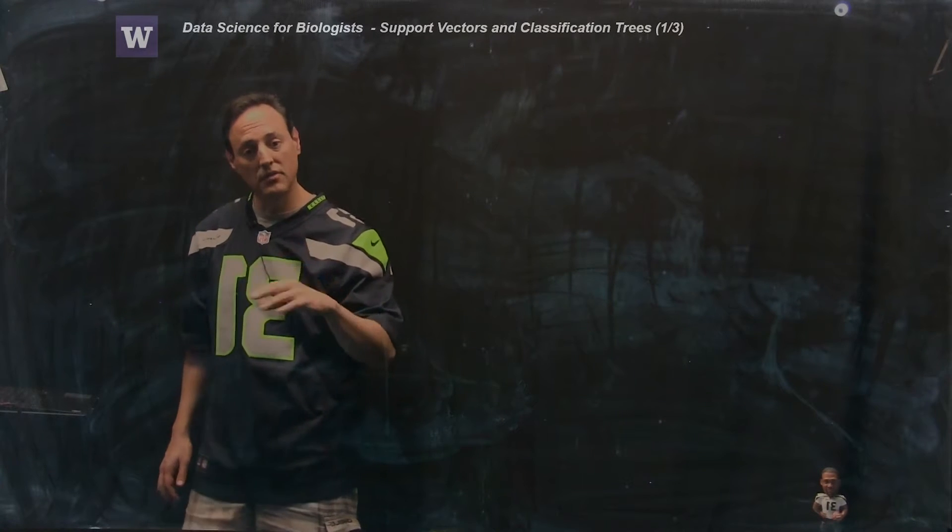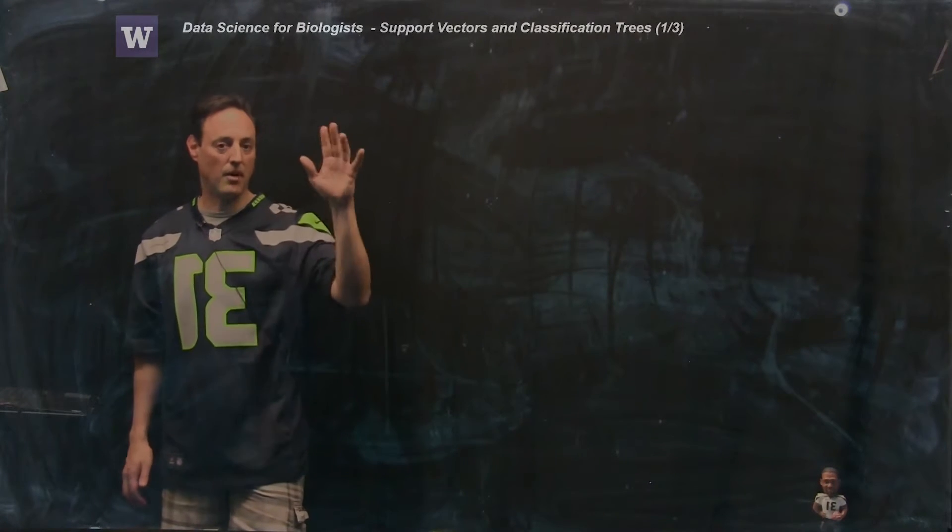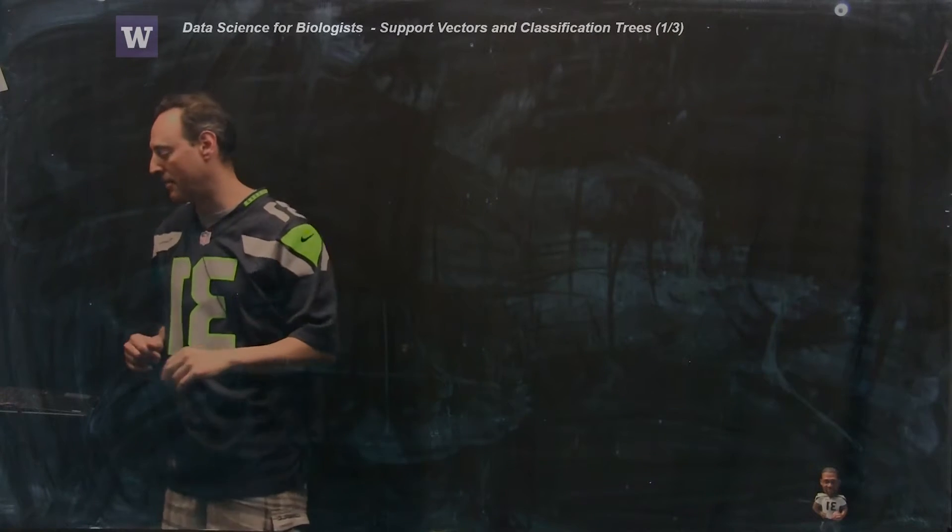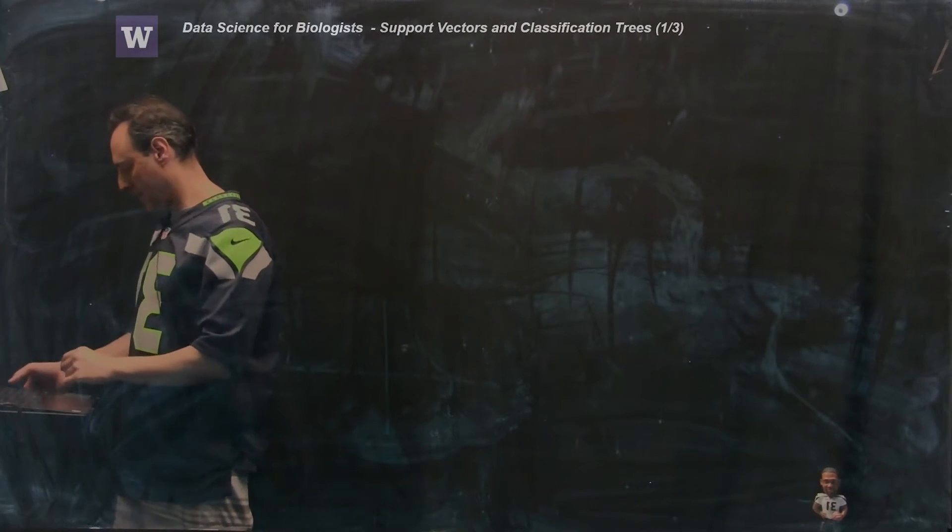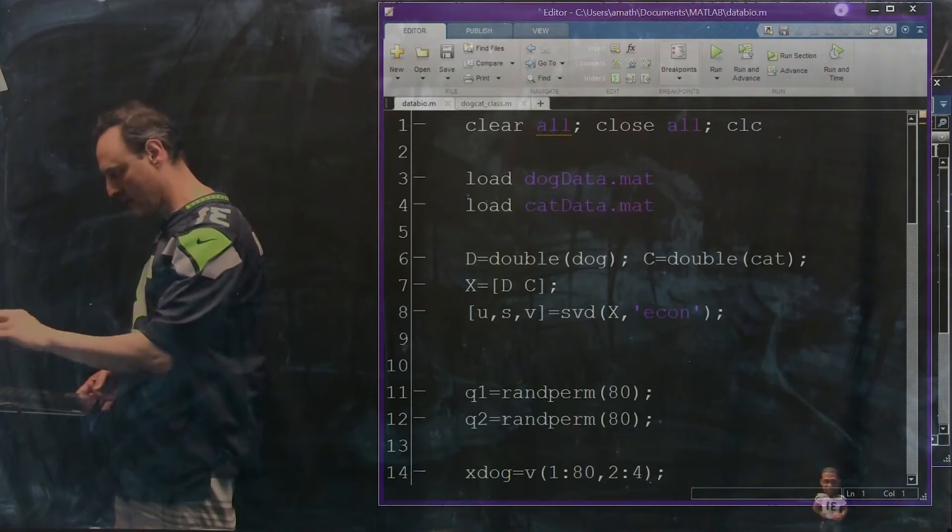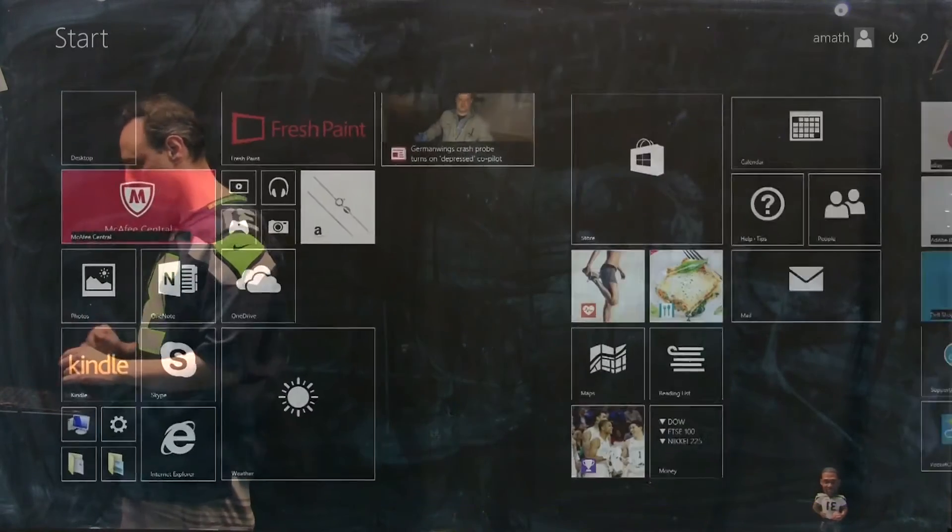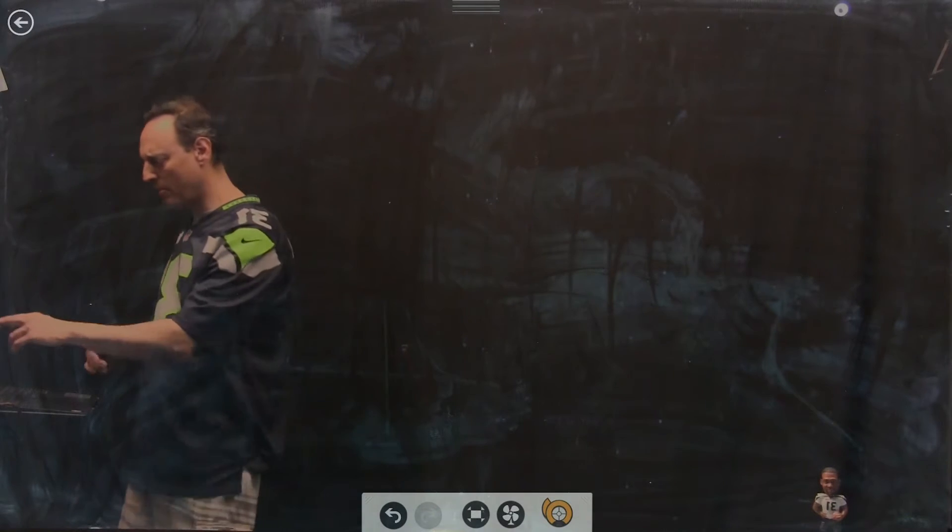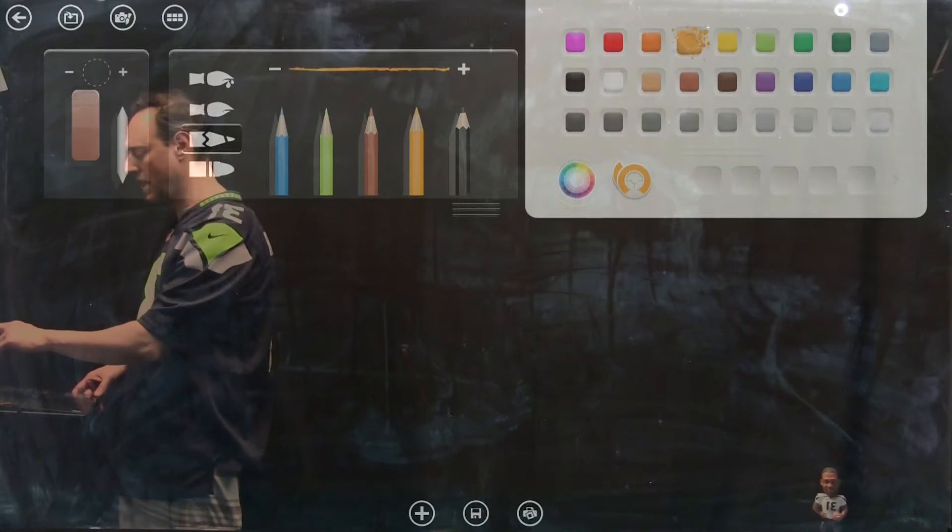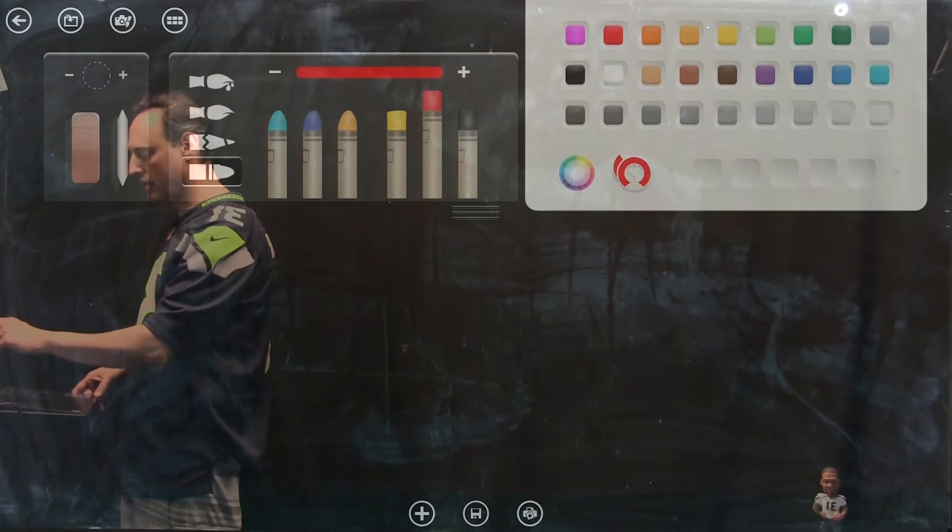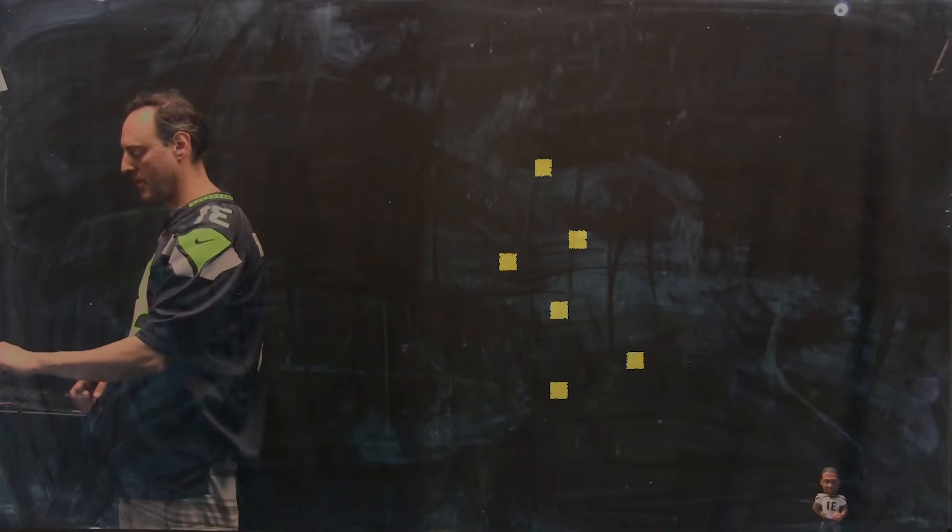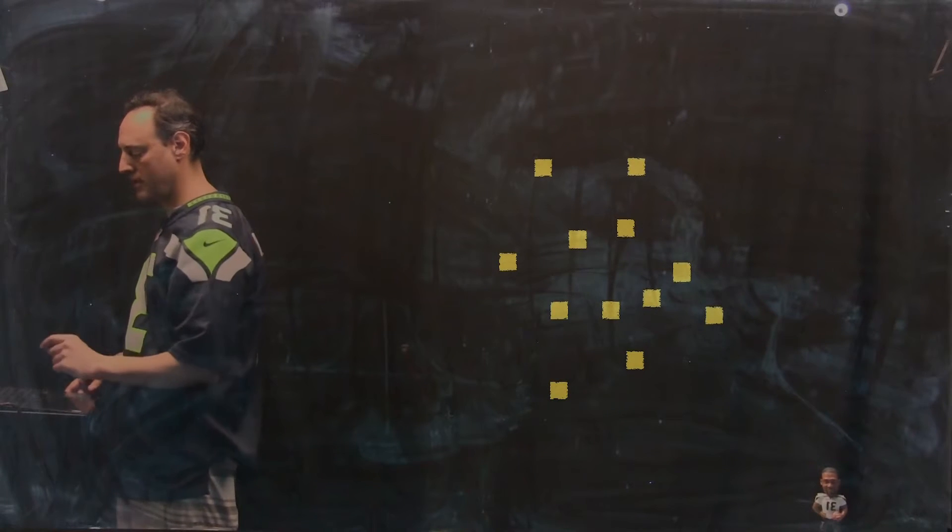Okay, so let me illustrate the ideas pictorially of what the optimization is in support vectors, and then we'll demonstrate it in practice in MATLAB. I'm going to put up some dots here, some data. We'll look first of all, we'll go back to our example. Maybe I have some squares here, so that's one set of data.